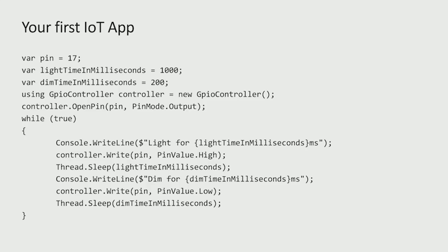Let's take a look at what code looks like for an IoT application. This is the minimal application for turning an LED on and off, and you can see I've hard-coded pin 17, which is the one I've connected the LED to. We're going to turn that light on for 1,000 milliseconds and then off for 200 milliseconds, and keep repeating that. We create a GPIO controller — that's the underlying concept that owns all of these pins — and then we're in a while loop writing a high value and then a low value to pin 17.